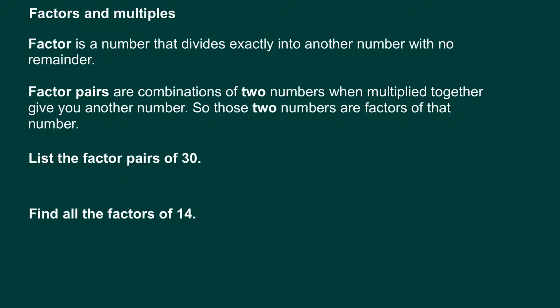A factor is a number that divides exactly into another number with no remainder. Factor pairs are combinations of two numbers that when multiplied together give you another number — those two numbers are effectively factors of that number. Let's have a go at a couple of examples. The first question says: list the factor pairs of the number thirty.